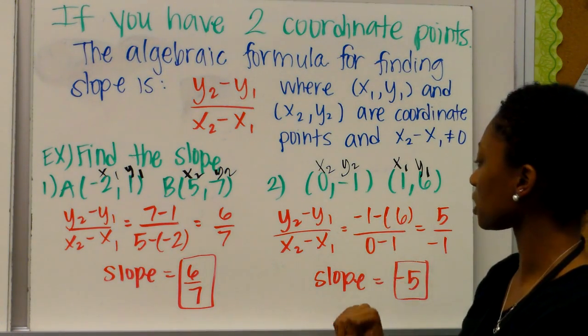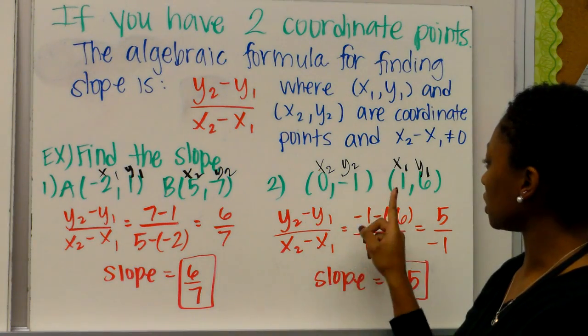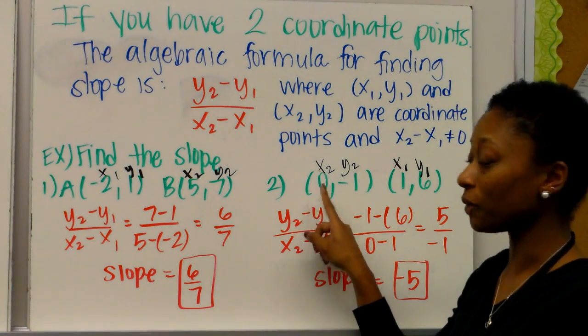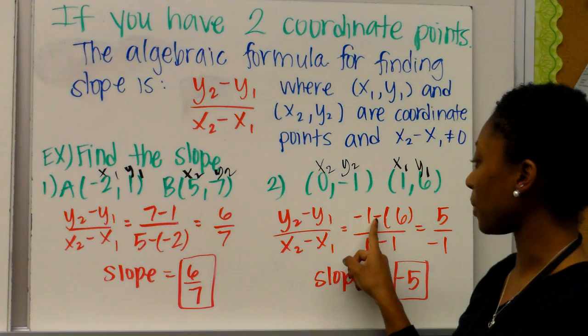So if I do negative 1 minus 6, excuse me, this should just be minus 6. And if I do, that means I have to do 0 minus 1.